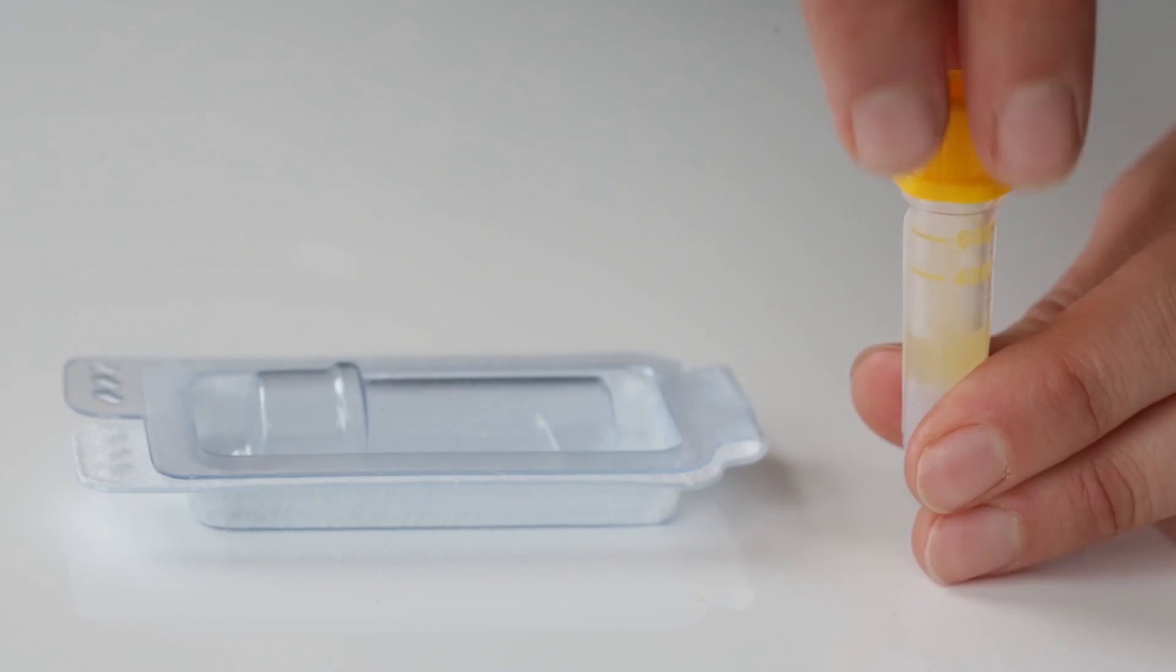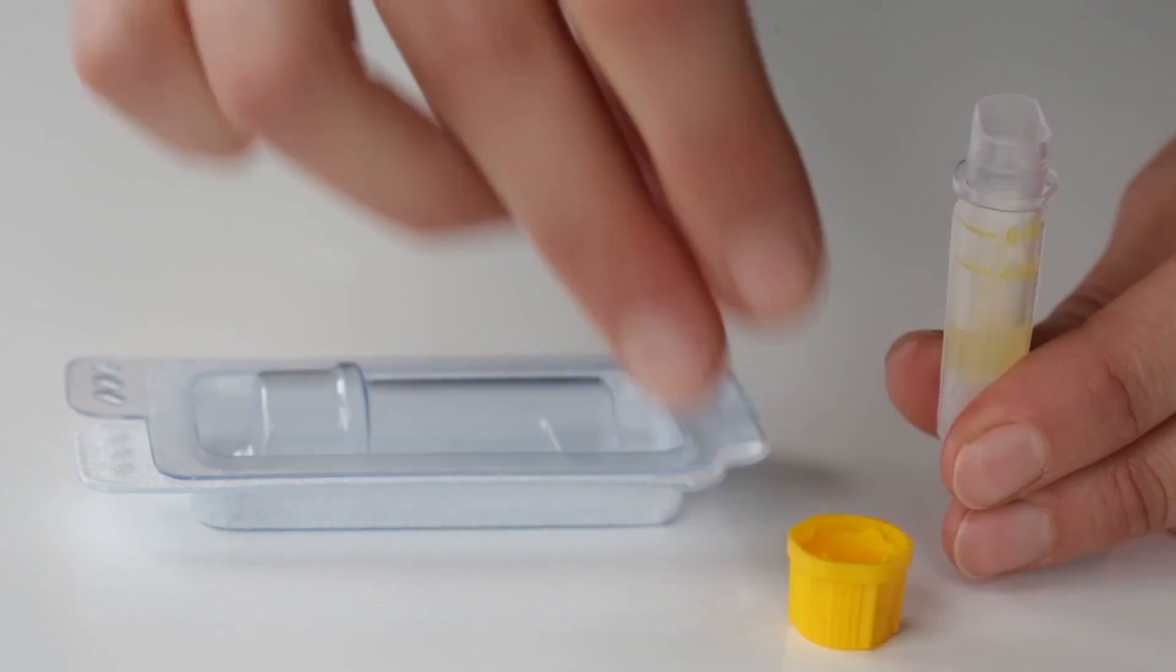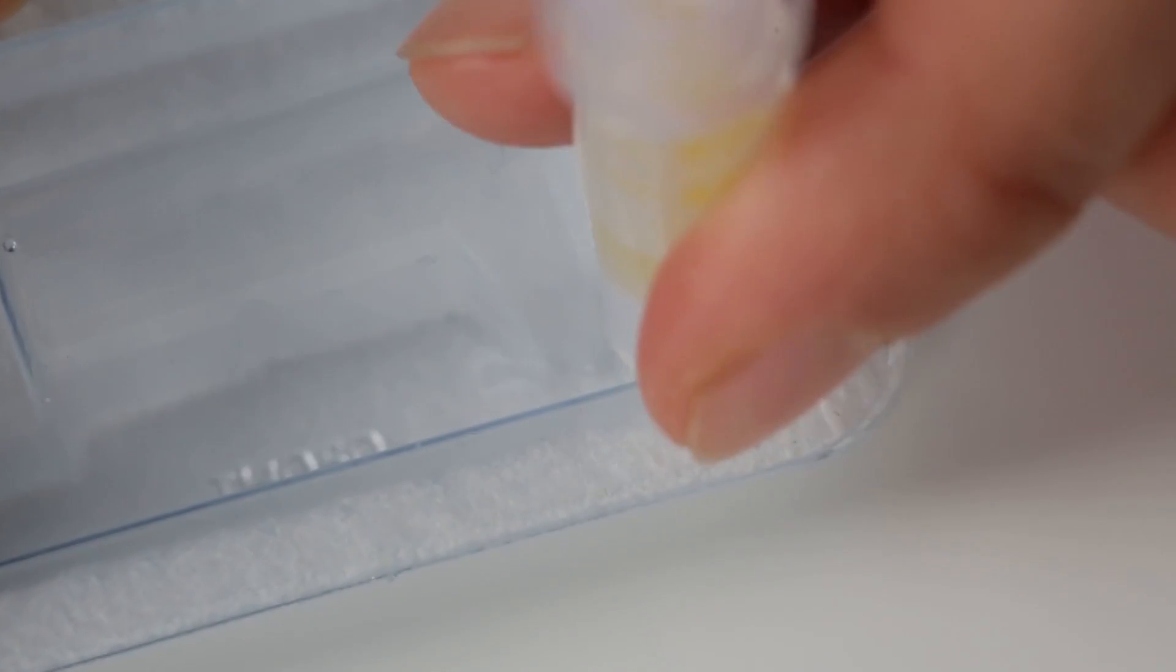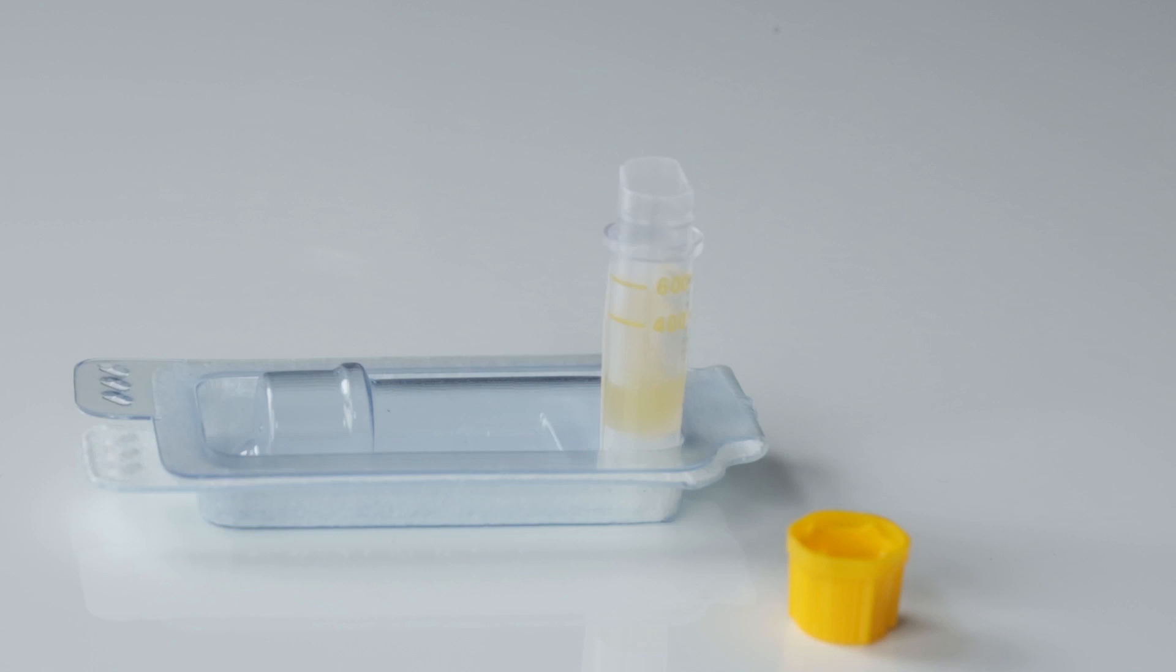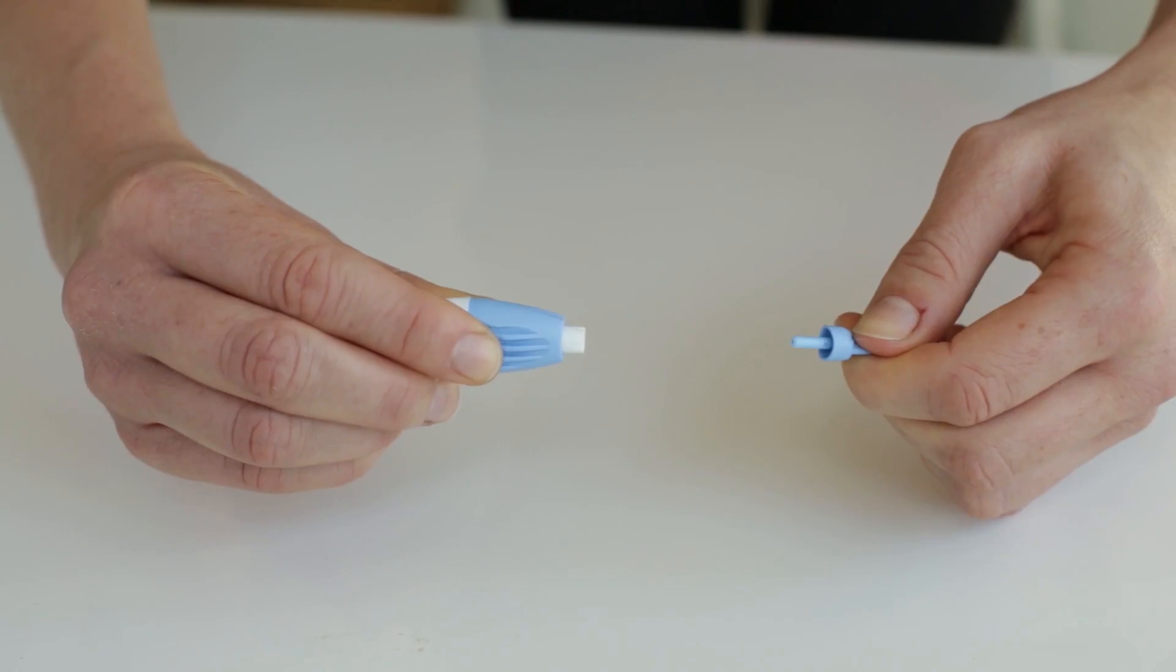Take out the sample tube and remove the yellow cap. Stand the tube in the closed packaging. Twist and pull the blue tip off the lancet.